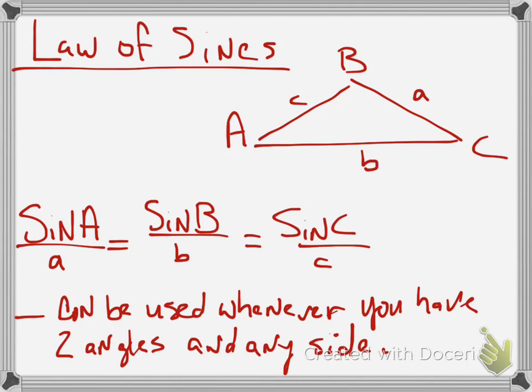So the law of sines basically says if you have a triangle ABC with sides ABC, that the sine of angle A over side a is equal to the sine of angle B over side b, which is equal to the sine of angle C over side c. You can use this law whenever you have two angles and any side. Now, keep in mind, even if you only have two angles, technically you have all three because you can subtract from 180 to find the third.